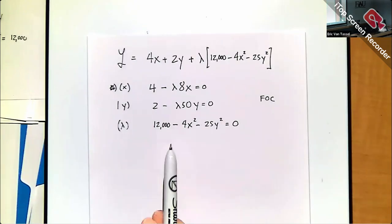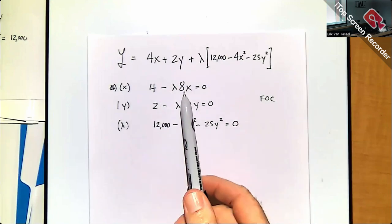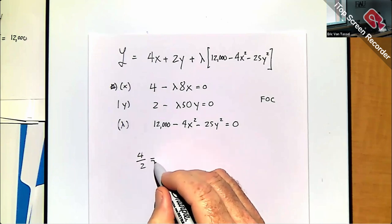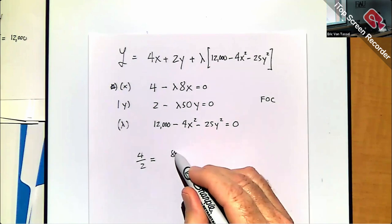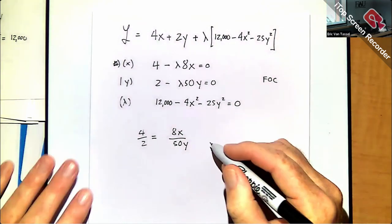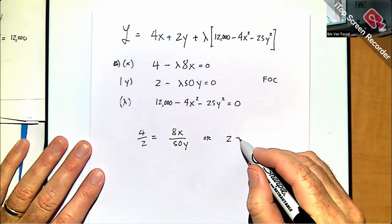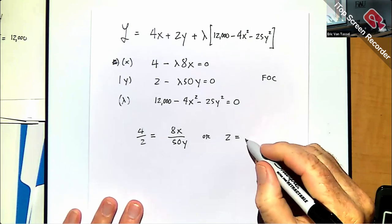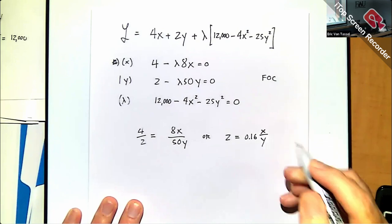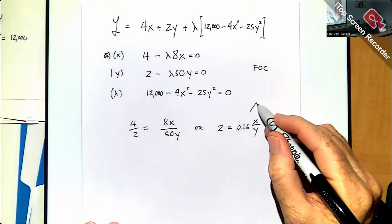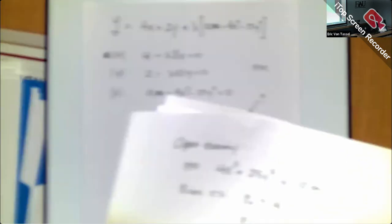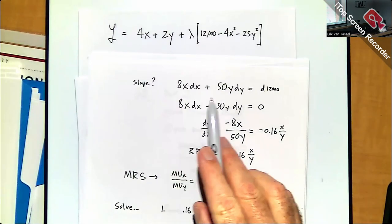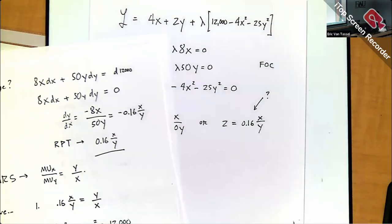Taking the first-order conditions: ∂L/∂X = 4 − 8λX = 0; ∂L/∂Y = 2 − 50λY = 0; and the PPF constraint. Dividing the first by the second to eliminate λ: 4/2 = 8X/50Y, or 2 = 0.16X/Y. This is exactly the RPT set equal to the price ratio PX/PY = 4/2.